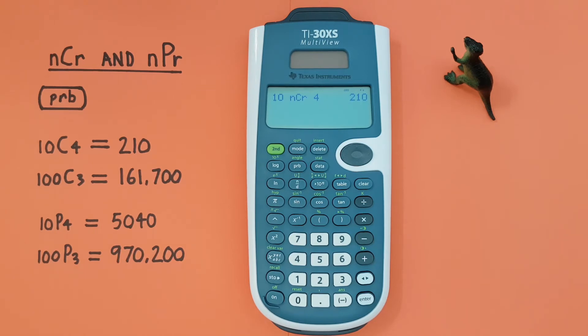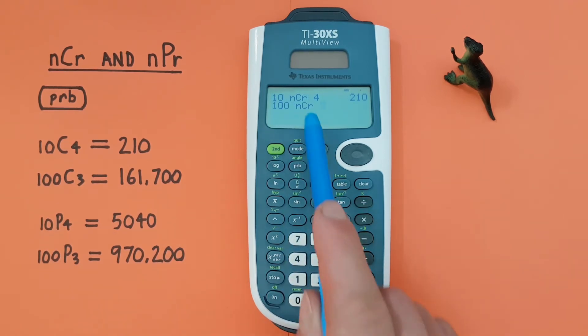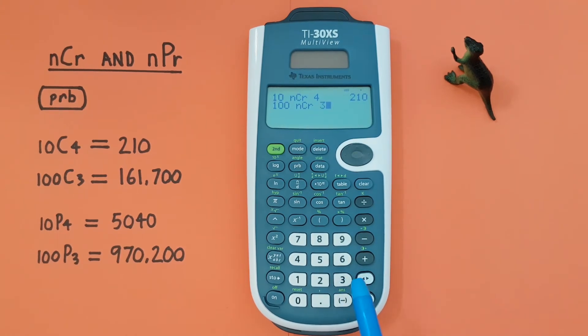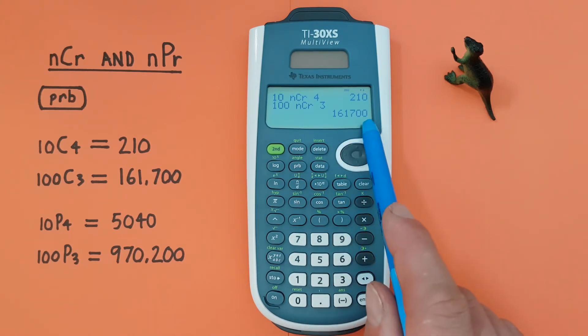Another option, let's say we wanted to do 100 choose 3. Again, we enter the 100 first, probability, and then we can just press 2 or scroll down to it, so that the nCr is on our screen, and then press 3 and enter. And we see that 100 choose 3 is equal to 161,700.